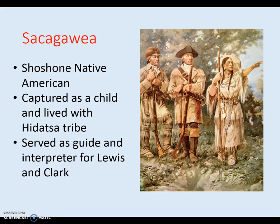Lewis and Clark secured from a Native American tribe a guide named Sacagawea. Sacagawea is a Shoshone Native American who was captured as a child and lived with the Dotson tribe. She joined Lewis and Clark's journey and served as a guide and interpreter, which made her very important as the first link to communicating with Native Americans because she knew more of the languages.